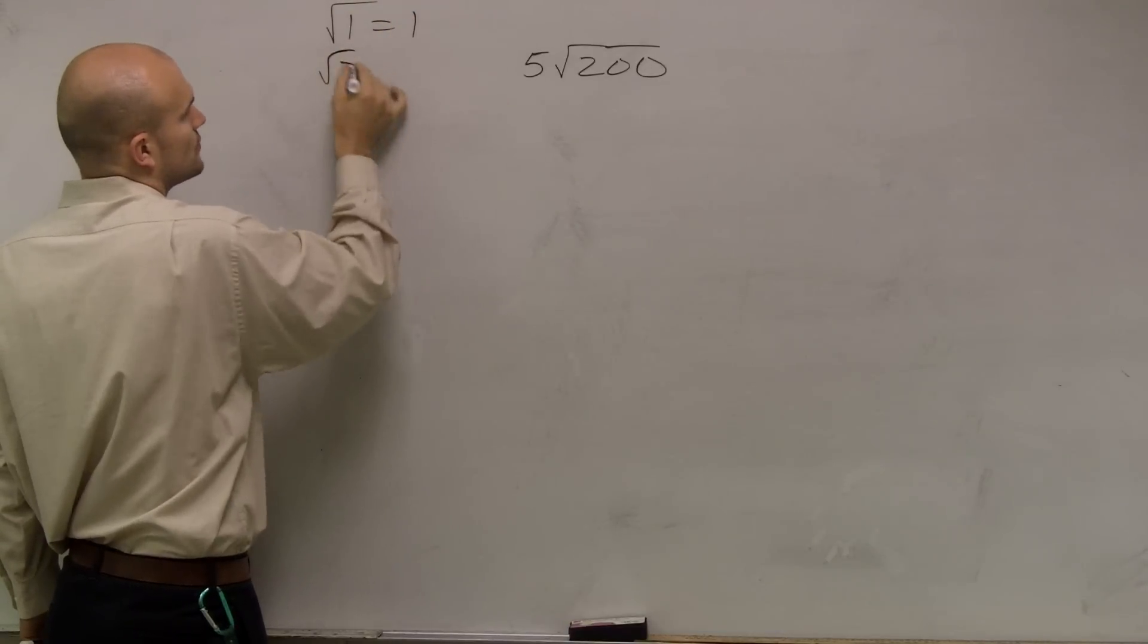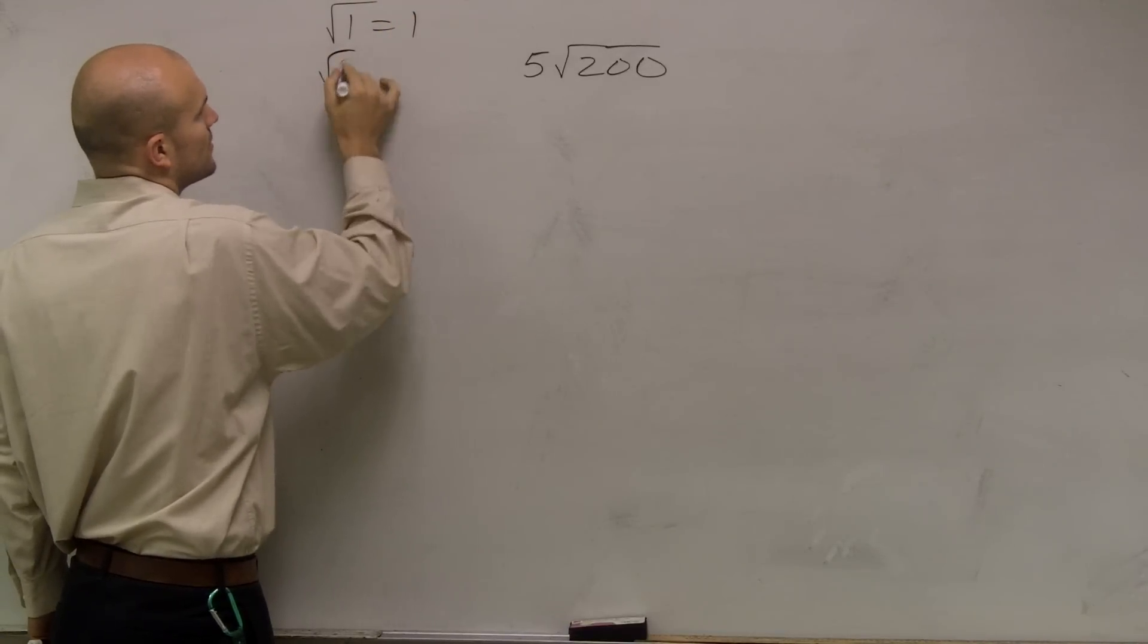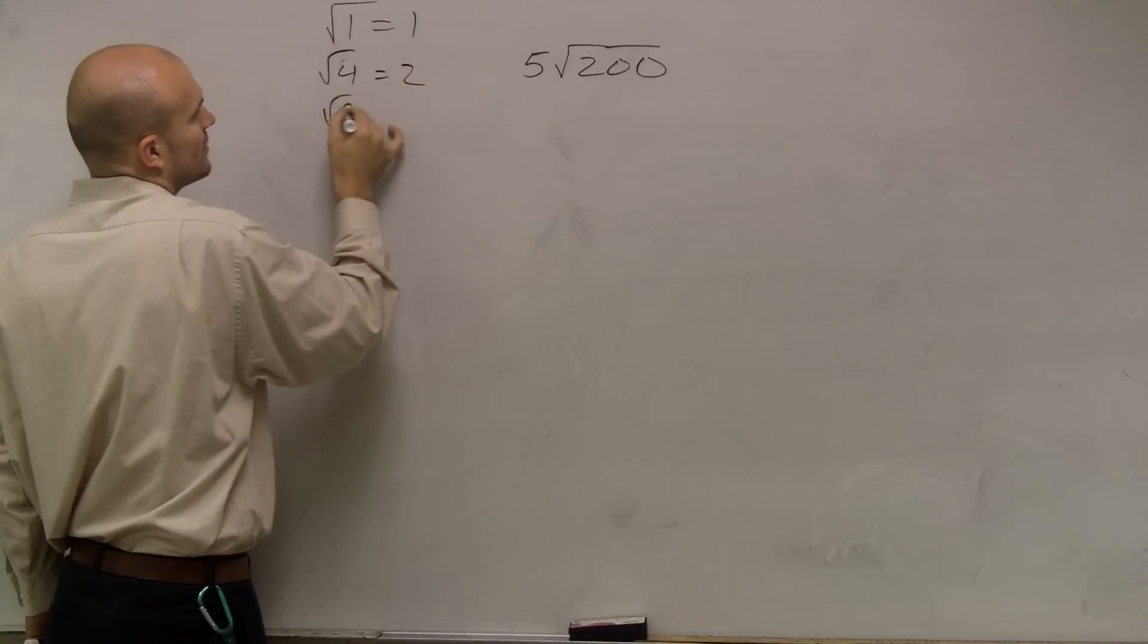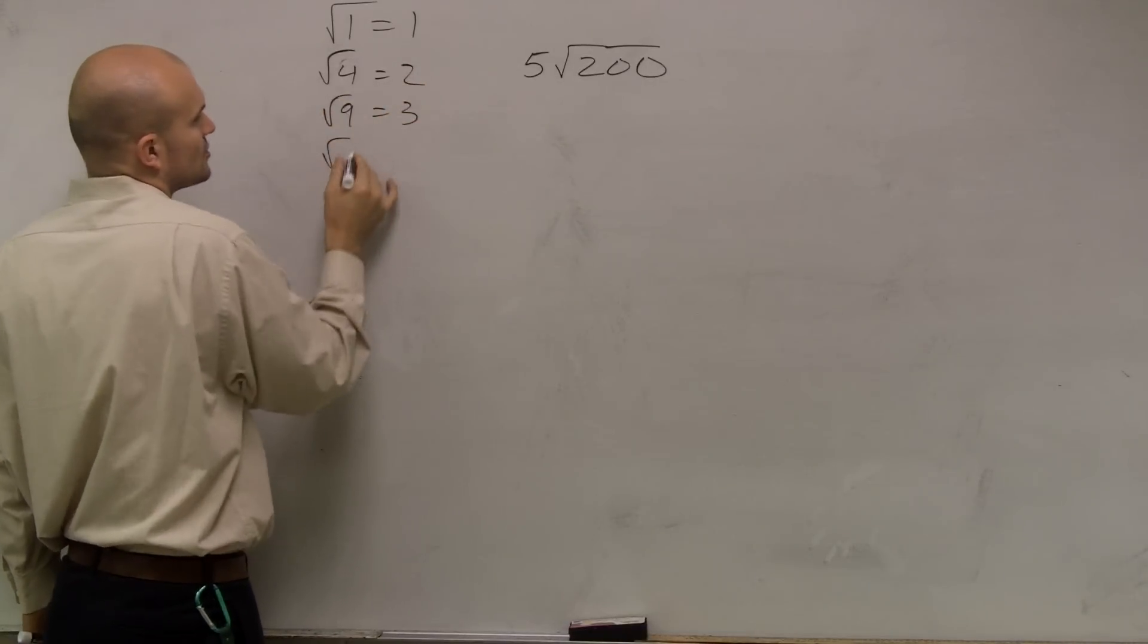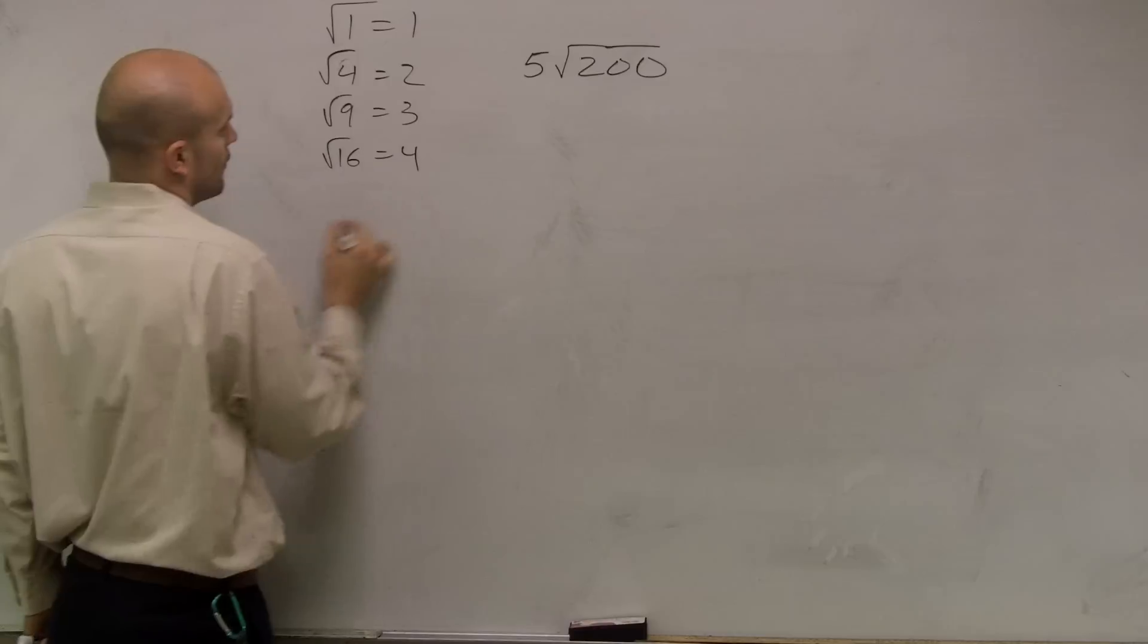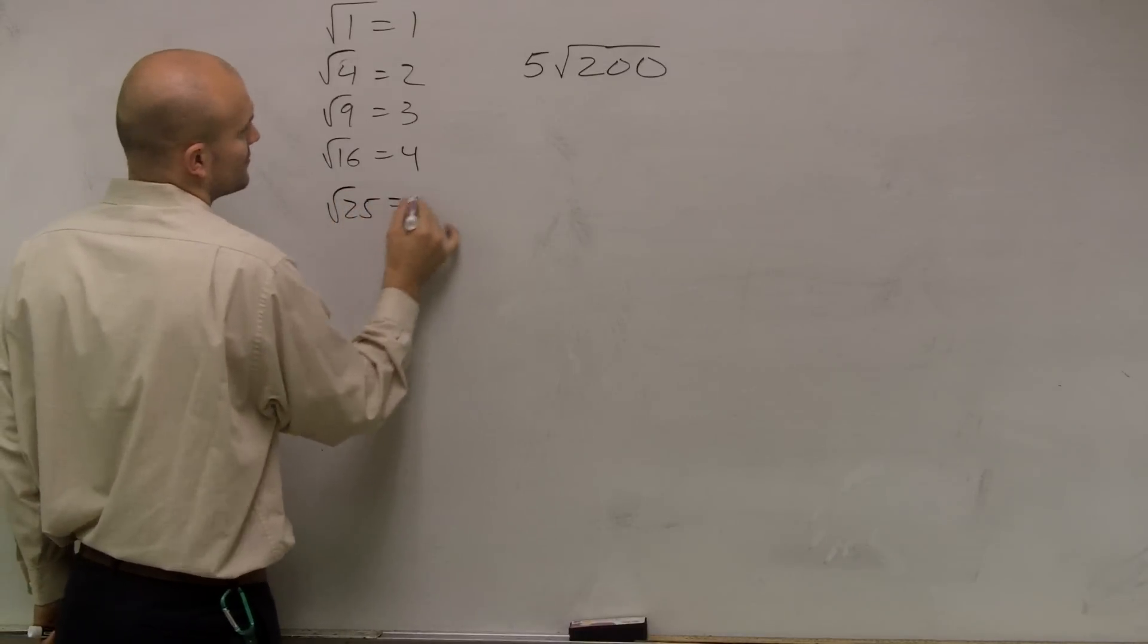The square root of 1 equals 1. The square root of 4 equals 2. The square root of 9 equals 3. The square root of 16 equals 4. The square root of 25 equals 5. The square root of 36 equals 6.